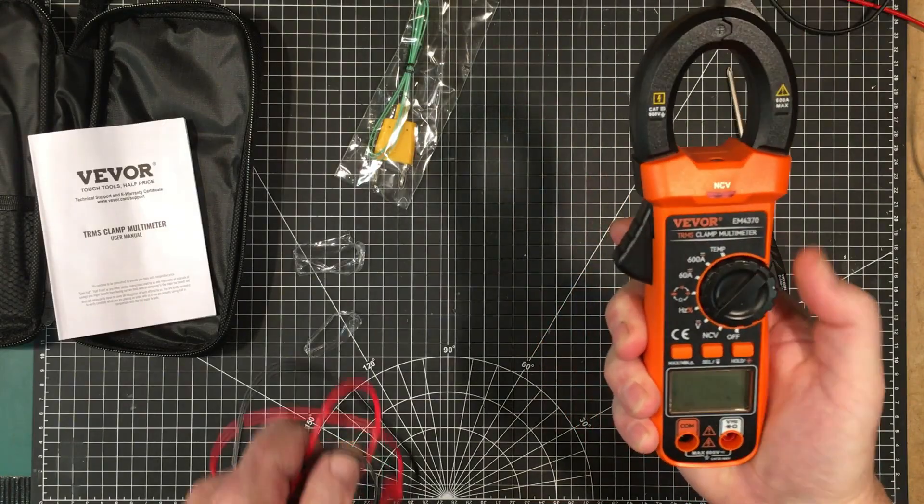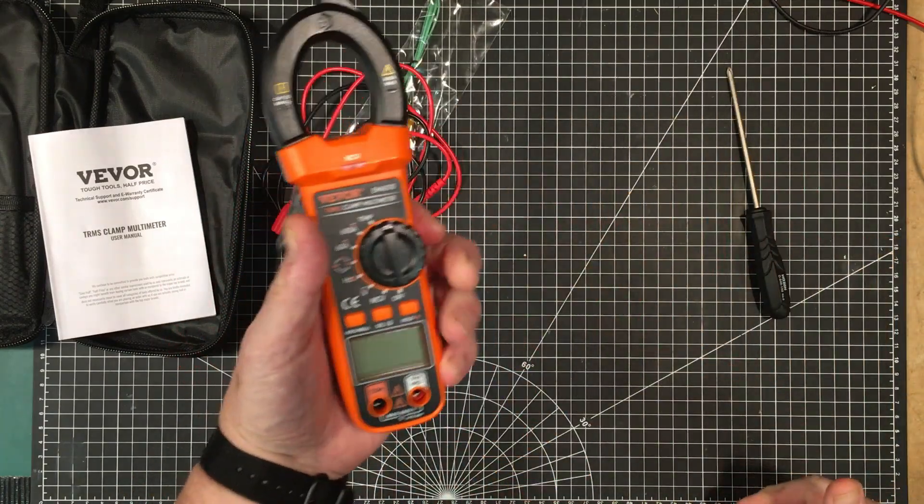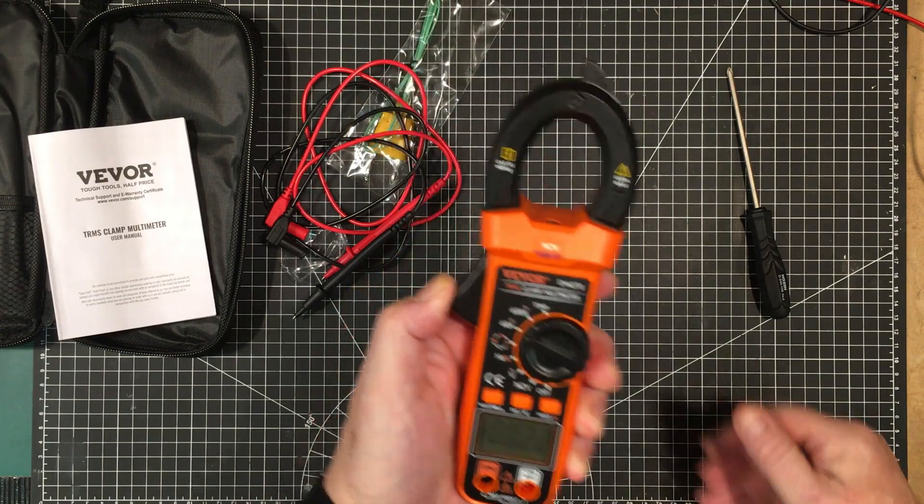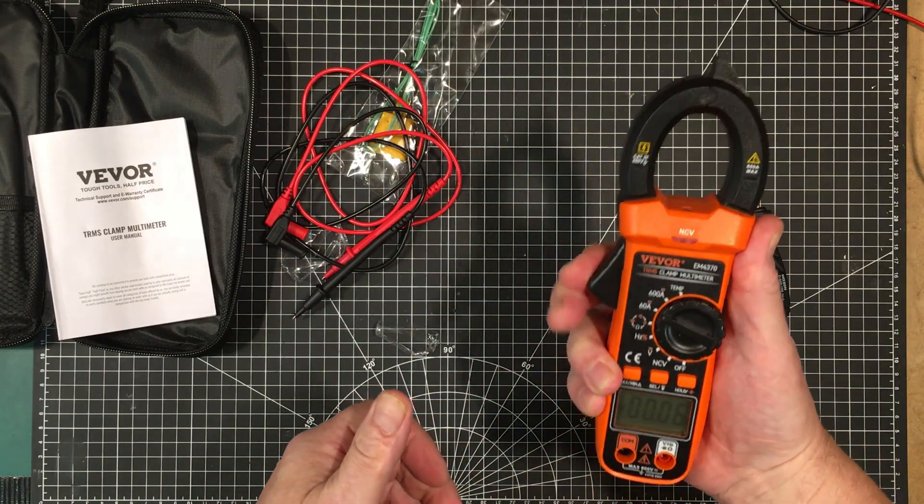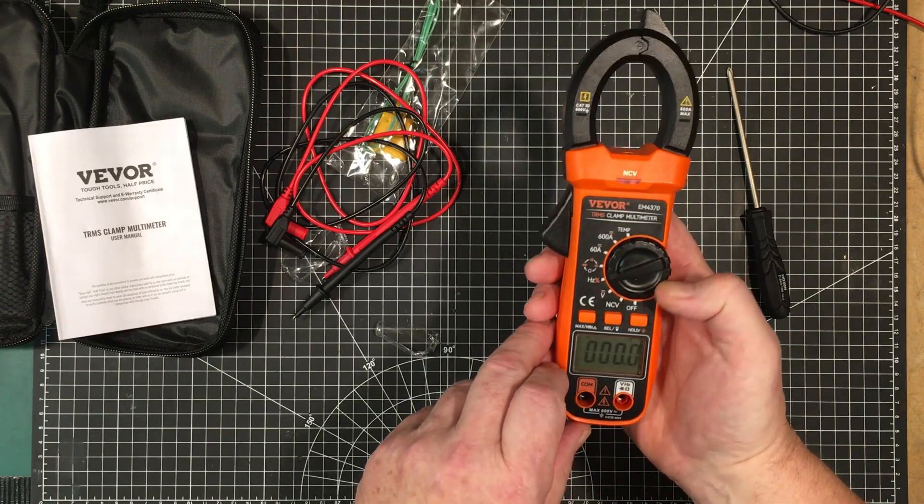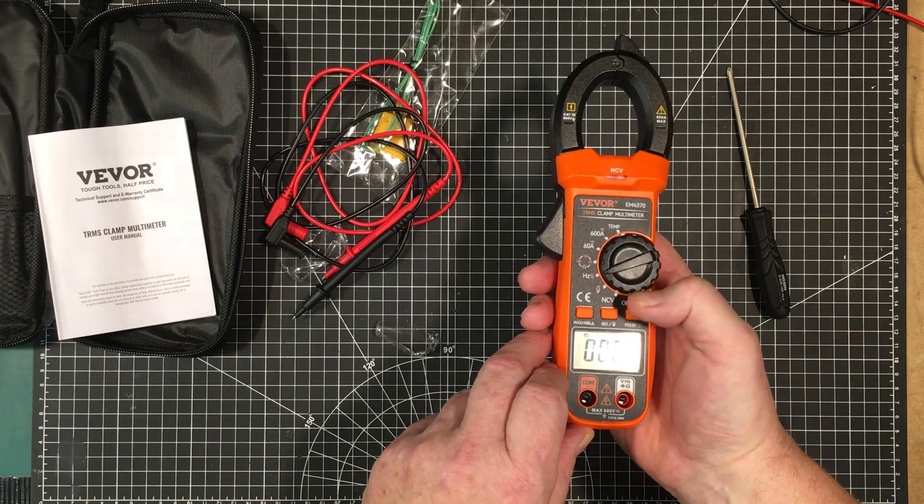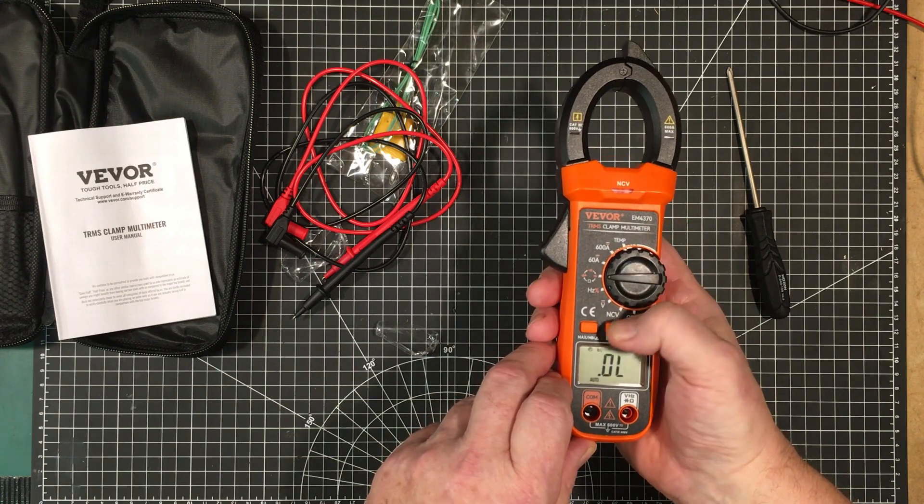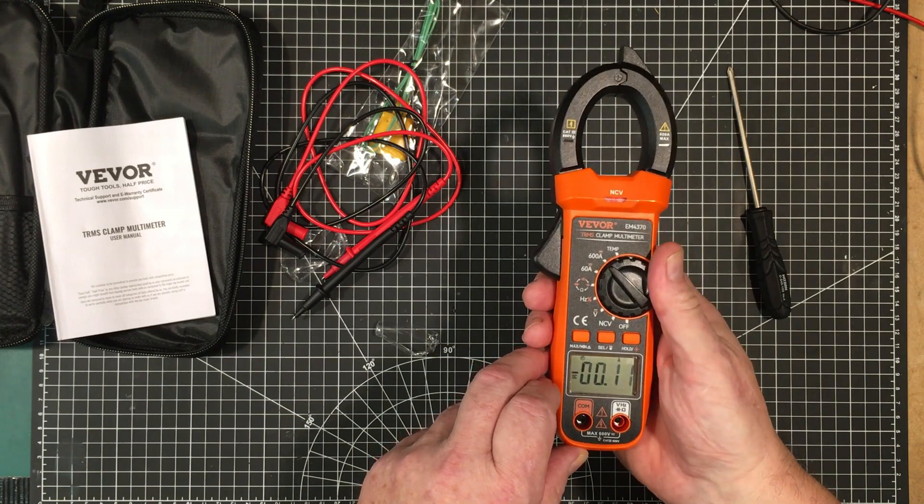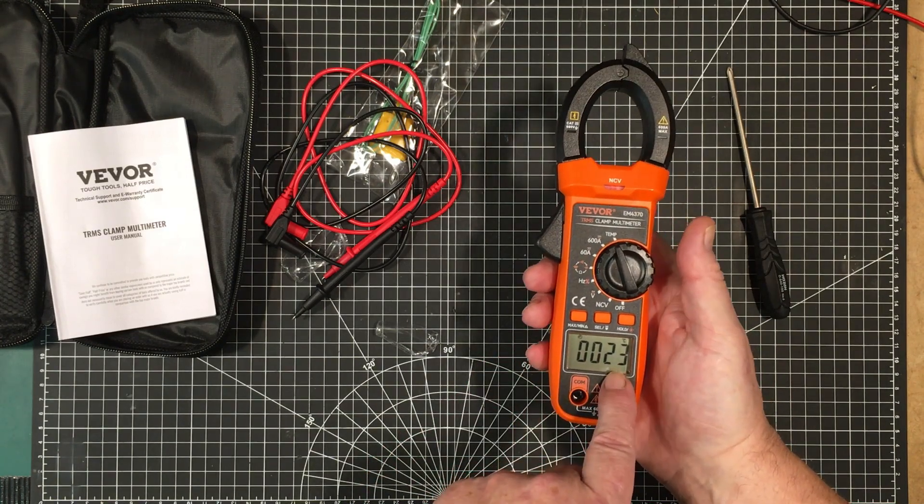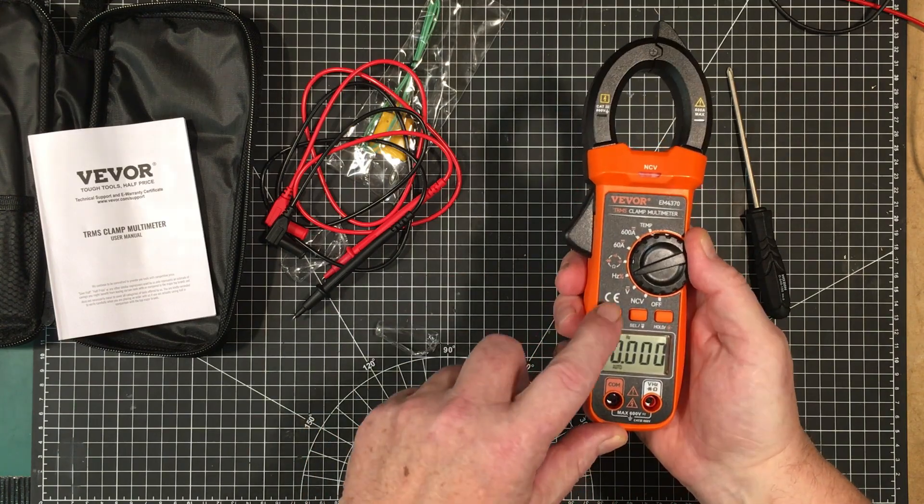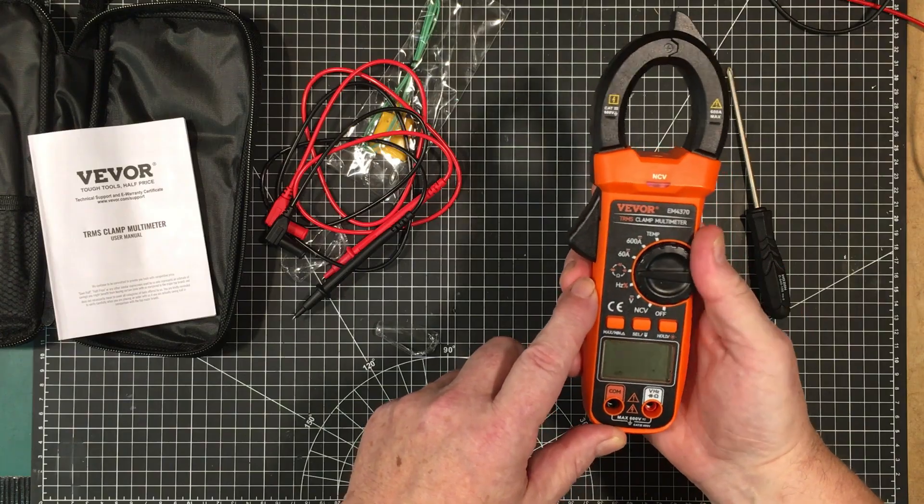It's very easily operated with a thumb of the right hand or with the fingers of the left hand. The clamp is fairly robust. It has hold and select functions. You can select different functions available there, AC or DC and amp ranges. It has a built-in thermocouple as well, so you can look at the ambient temperature. It's got a max min mode. Very nice.